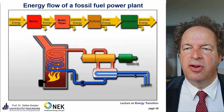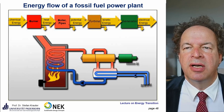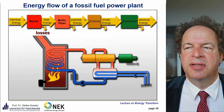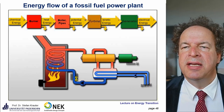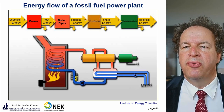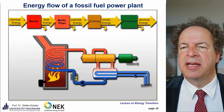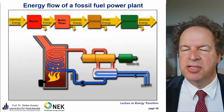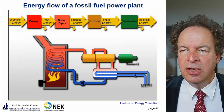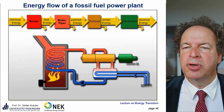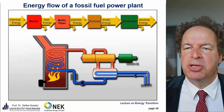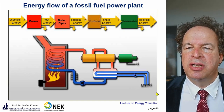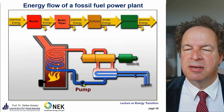Here you see the energy flow of a fossil fuel power plant in more detail. Chemical energy comes in at the burner with some losses indicated by a yellow arrow. The remaining heat energy goes to the boiler, is converted into steam, goes into a turbine, and then kinetic energy goes into a generator to produce electrical energy. To achieve high Carnot efficiency, you need a high temperature difference — the steam turbine exhaust is cooled down to achieve a low temperature, and a pump is needed for high pressure.